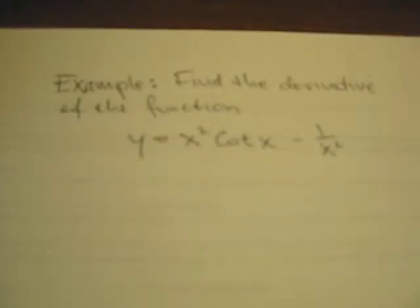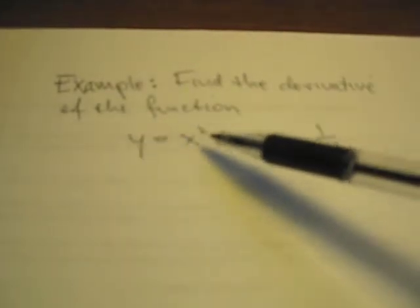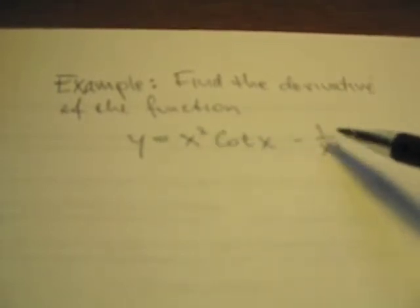In this question here, we're asked to find the derivative of a function that involves trigonometric functions. You'll see in this particular case here, the function is y equals x squared cotangent x minus 1 over x squared.